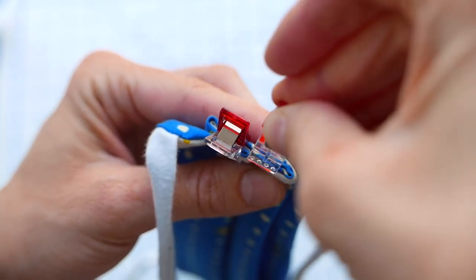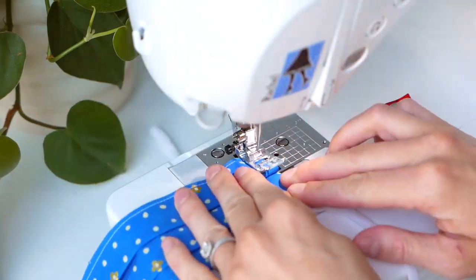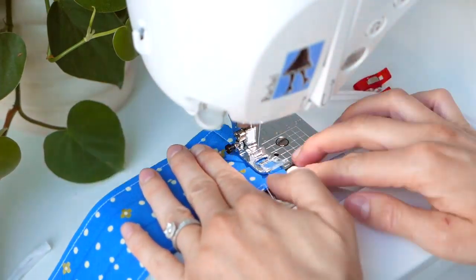So fold those up it might take you a couple tries to get them even but that's okay just reclip them if you need. I'm going to bring this back to the sewing machine and just sew around the entire rectangle again and then we're done.